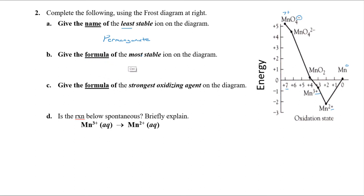The formula of the most stable ion—the most stable is going to be the lowest energy. This is the minimum in energy right here. If we look at that, that's as low as you can go. So the formula for this one is pretty easy: this is going to be manganese 2+.